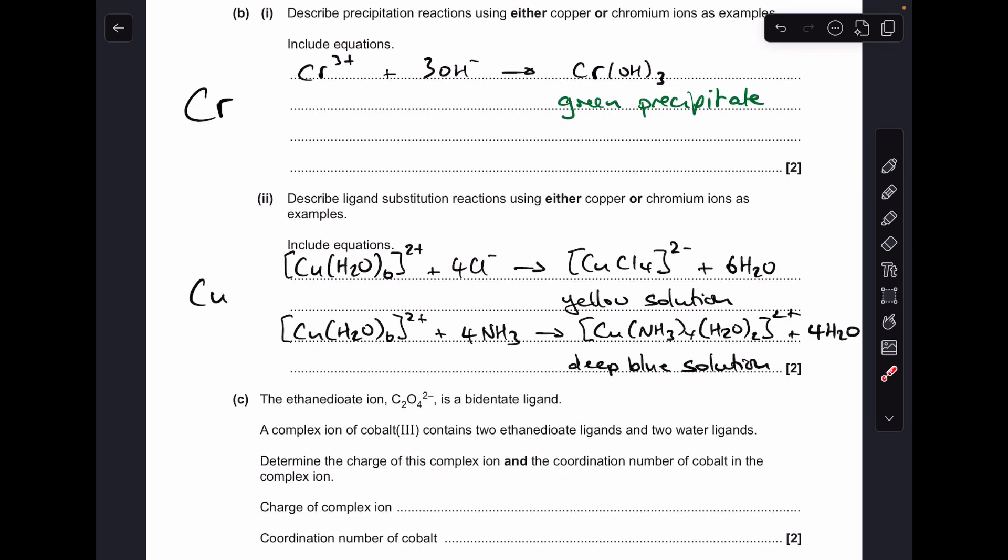Now moving on to the ligand substitution reactions. I've written up the copper ones first. The easiest one in my opinion is this one here. So that's the aqueous copper 2+ ion, but we've got to use the full formula now showing the six water ligands. That reacts with four moles of Cl- ions, and you get this complex here, which is a yellow solution. Obviously the six water ligands have been substituted by those four chloride ligands. The other one you could have gone for is the ligand substitution of copper hexa-aqua 2+ with excess ammonia. So we put four moles of ammonia into the equation, and basically two of the water ligands are left in and four of them are substituted with the ammonia ligands. That's a deep blue solution, and you would have to specify the deep.